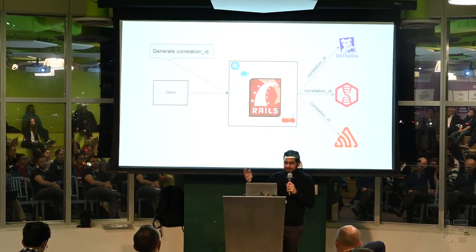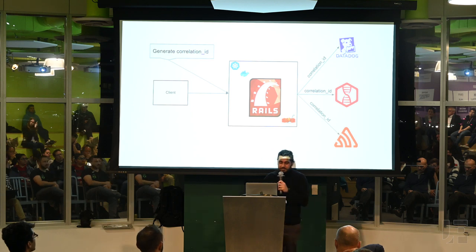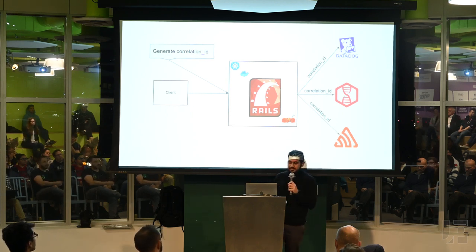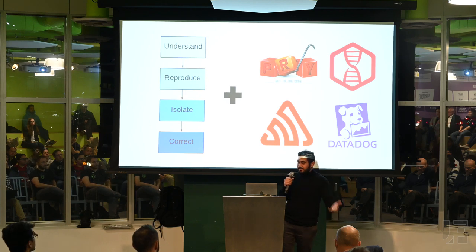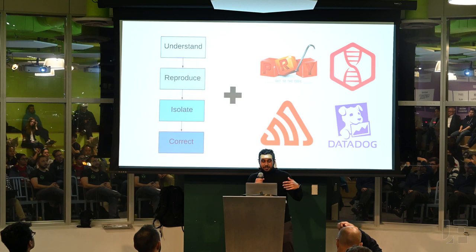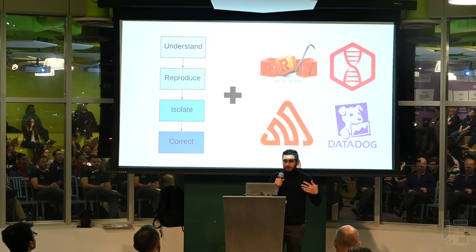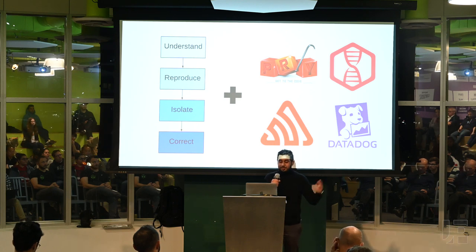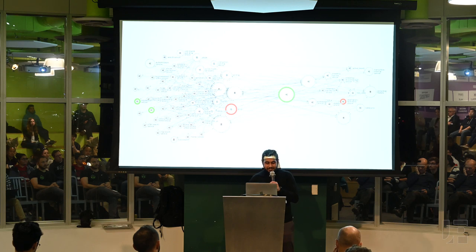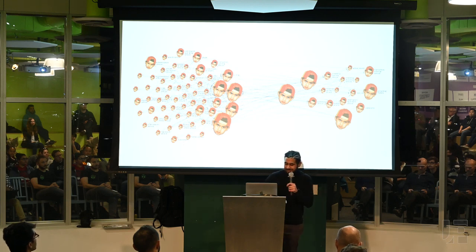As a quick summary: we use Datadog for our APM metrics and monitoring, LogDNA for log management, Sentry for error monitoring, and Pry as our debugger. We use this correlation ID to link all those services together. The overall takeaway is: first, move from using only intuition to having a process — understand, reproduce, isolate, and correct the bug. Once you're in an actual production level app, you can use tools like Pry, LogDNA, Sentry, and Datadog to take you to the next level and automate a lot of those steps. Now I'll leave room for questions.